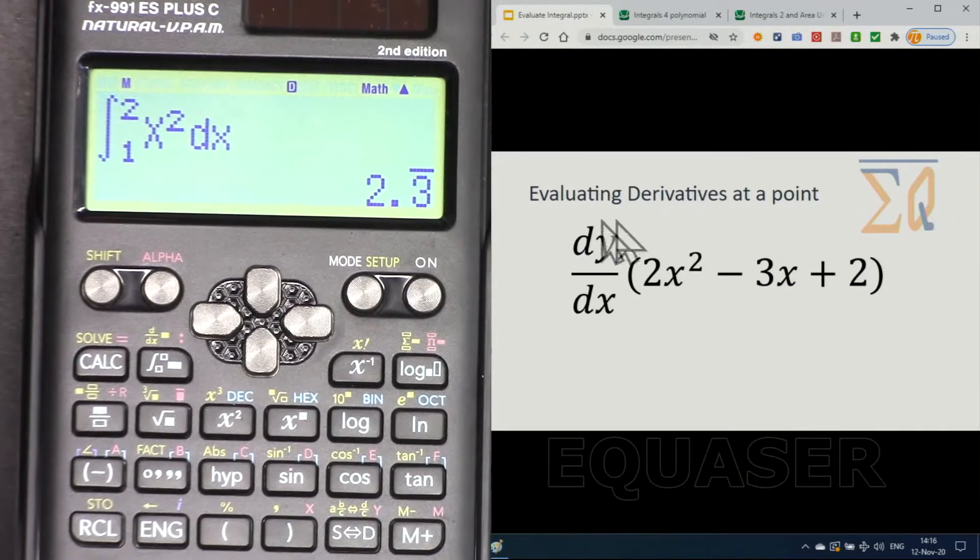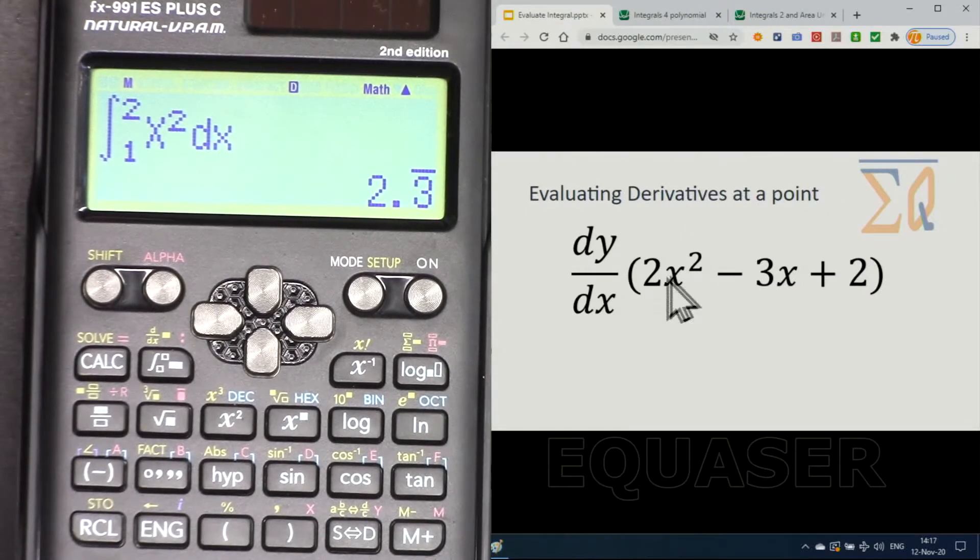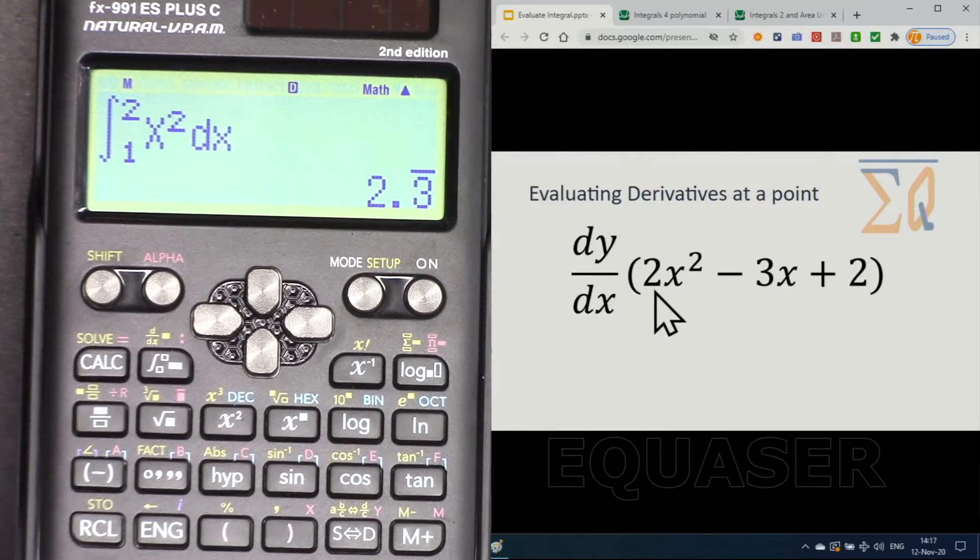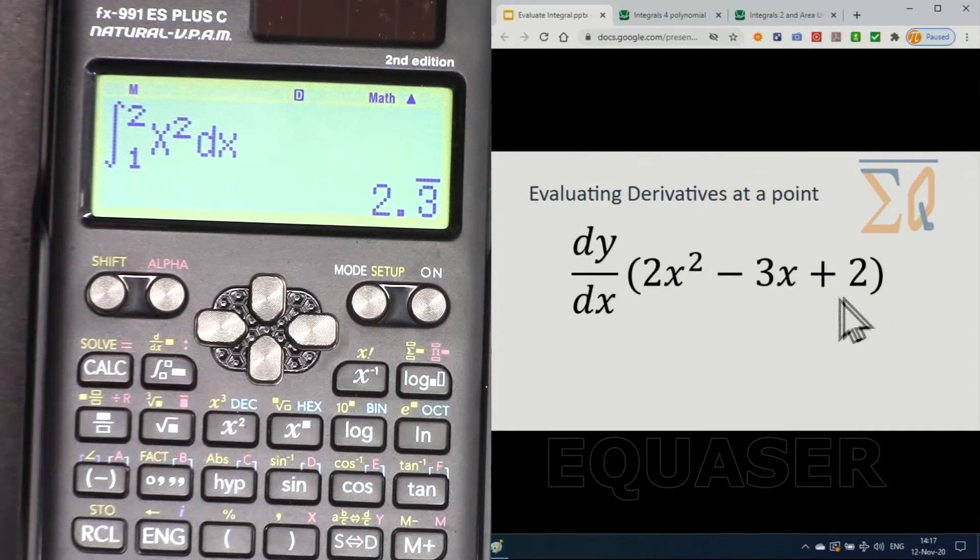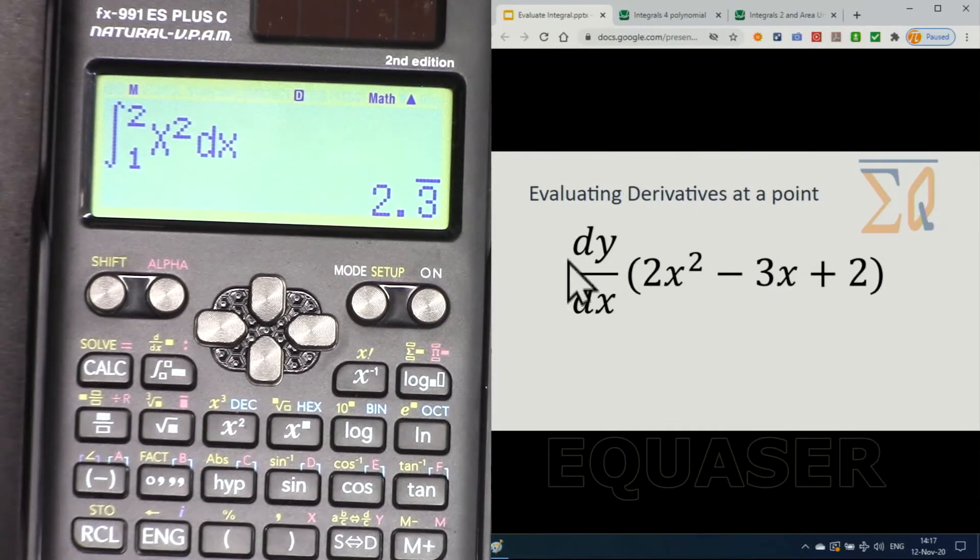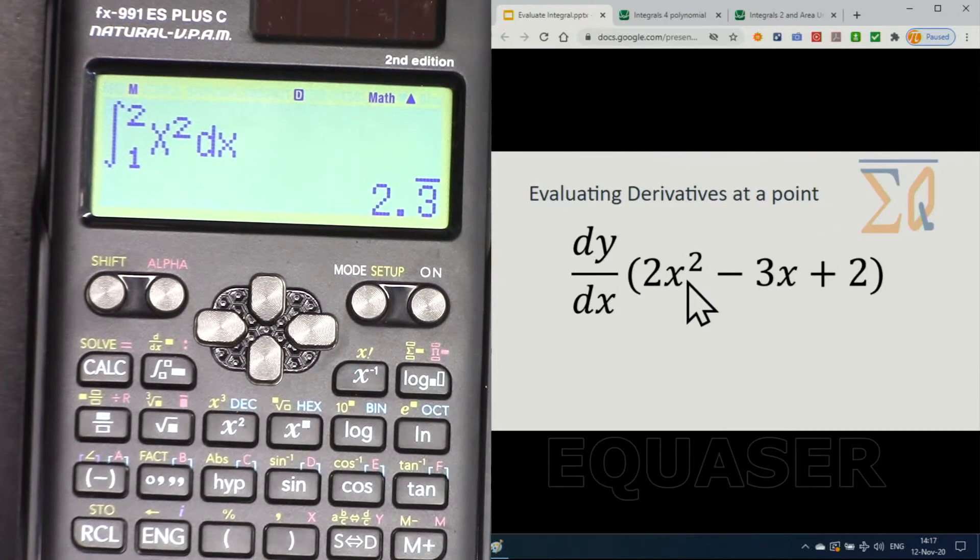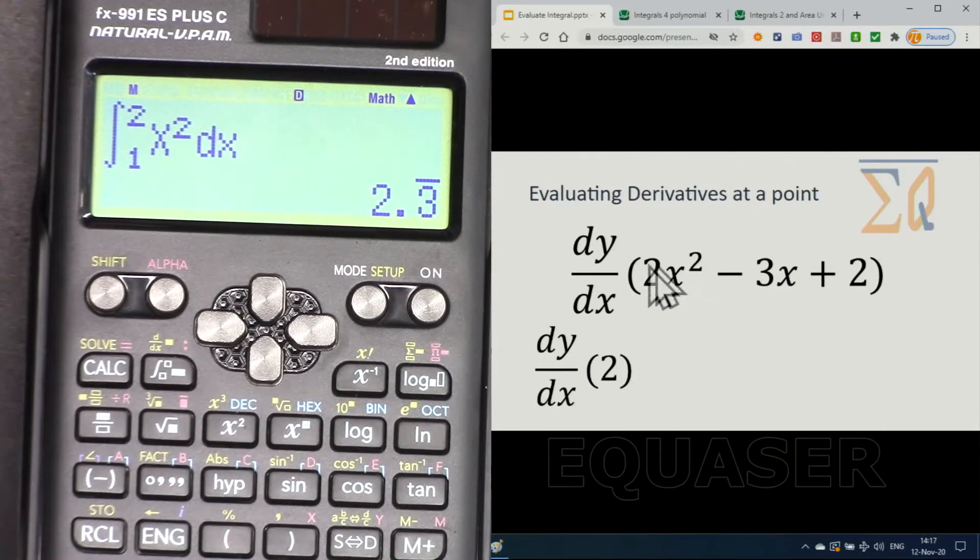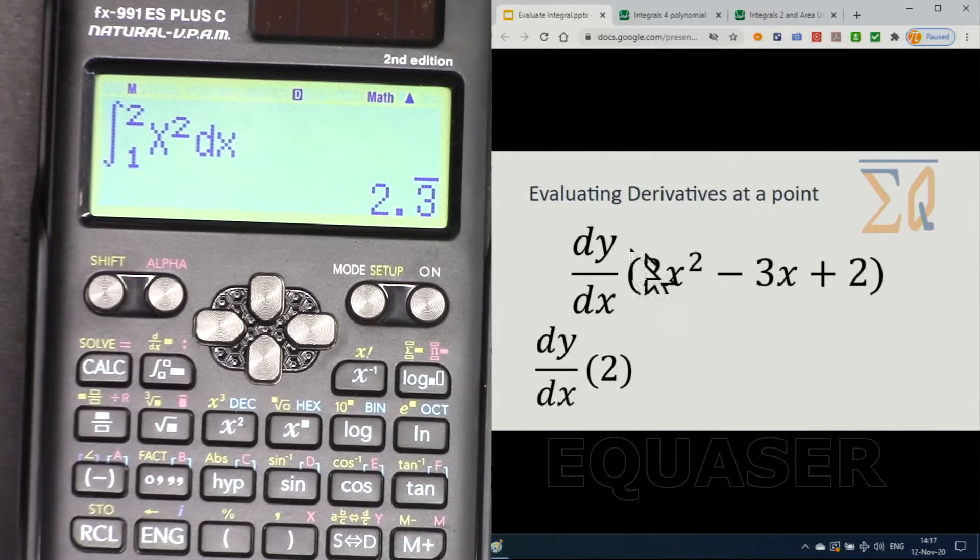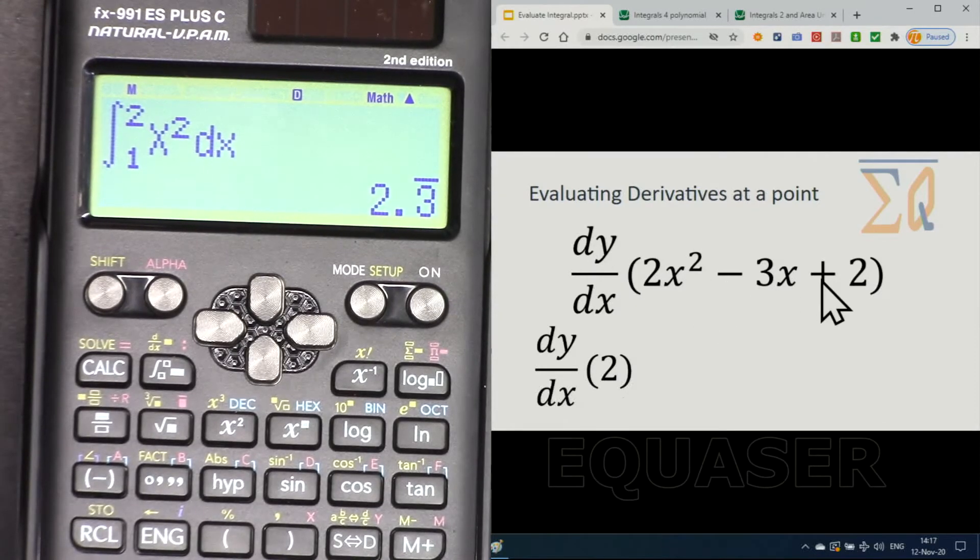Now let's see how we can evaluate the derivative at a point. For example, this function here that you see: 2x squared minus 3x plus 2. This is the velocity of an object, and if you take the derivative, it will be the position. Usually, the question would be: find the position, or evaluate the derivative at 2. So what it means is, evaluate the derivative at 2, or find the position of an object at 2 seconds, and at 3, and for example at 4.